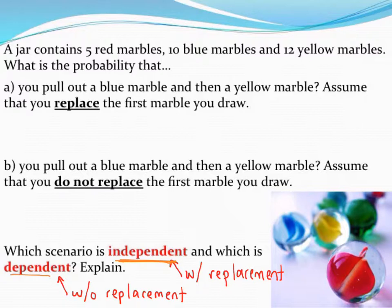However, when we do not replace the marble, this is called a dependent event because our probabilities have changed. We've changed the situation that we're pulling marbles from.